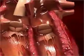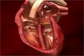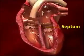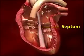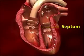The thick muscle wall running down the middle of the heart is called the septum. It divides the auricles and ventricles.